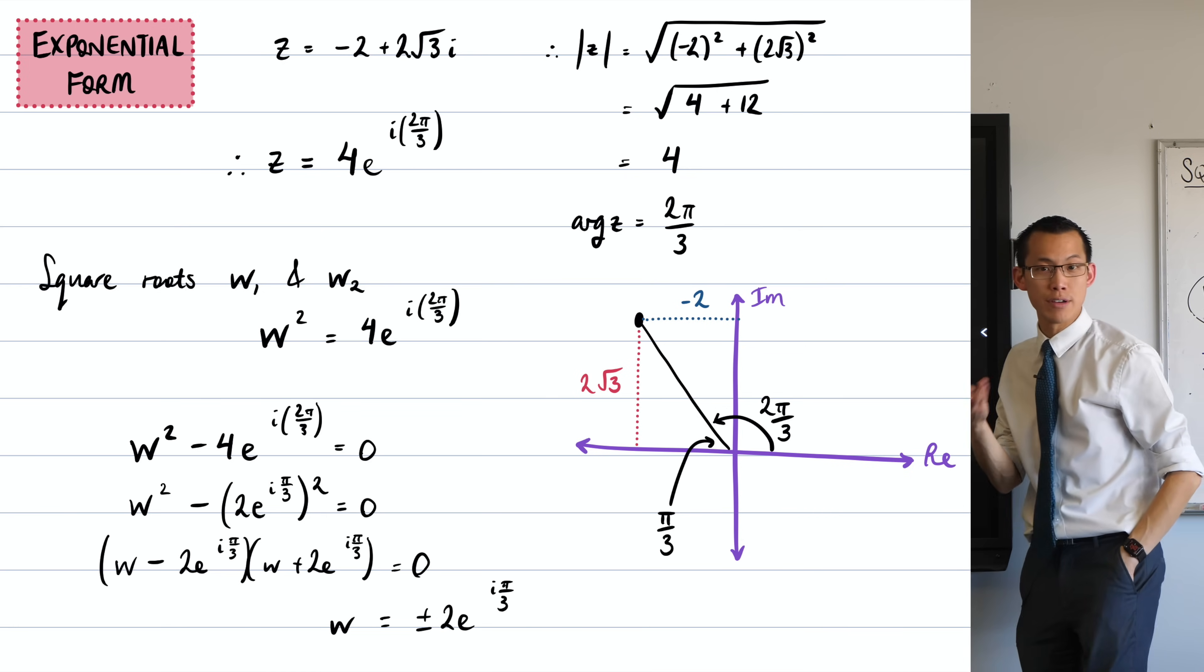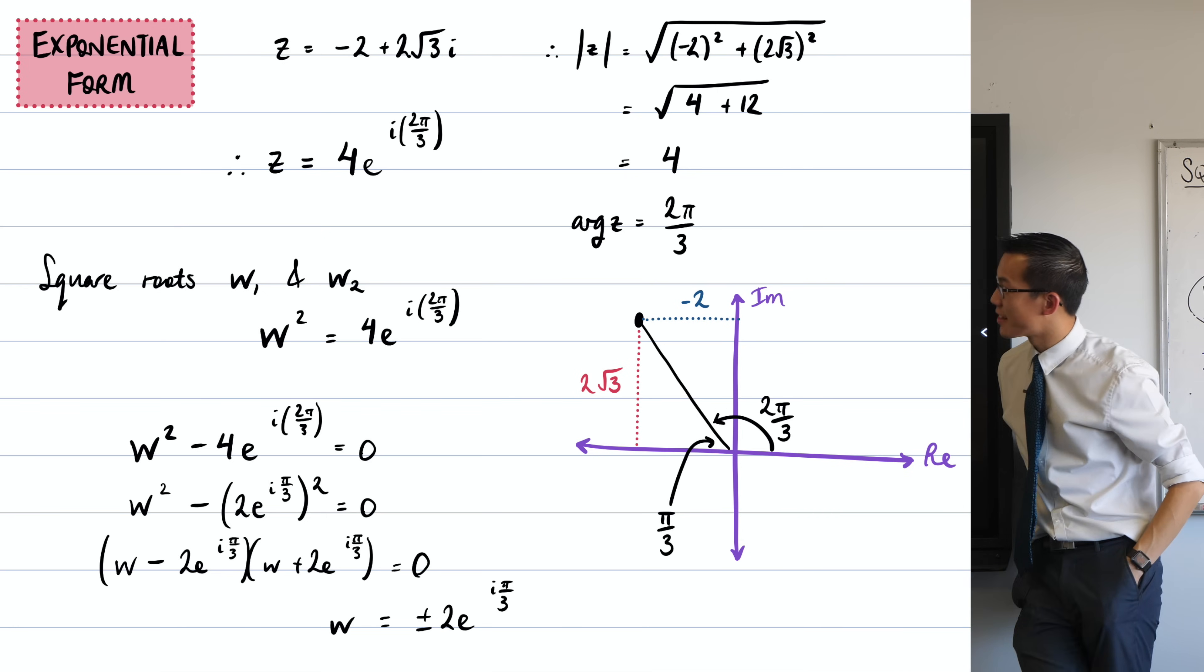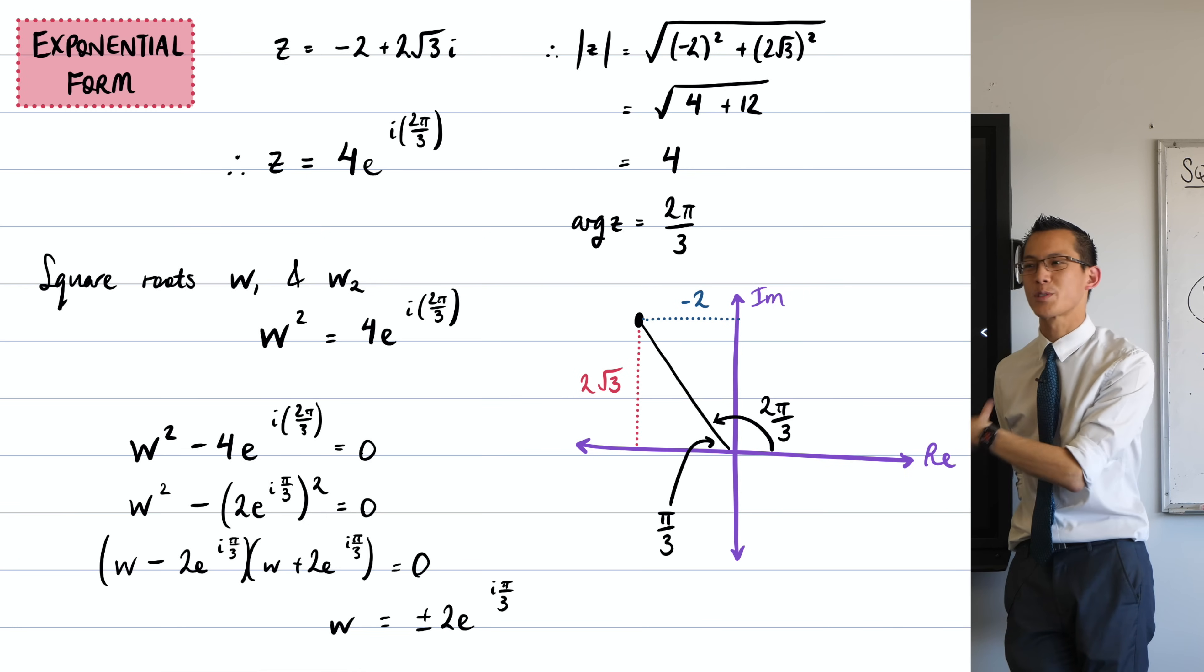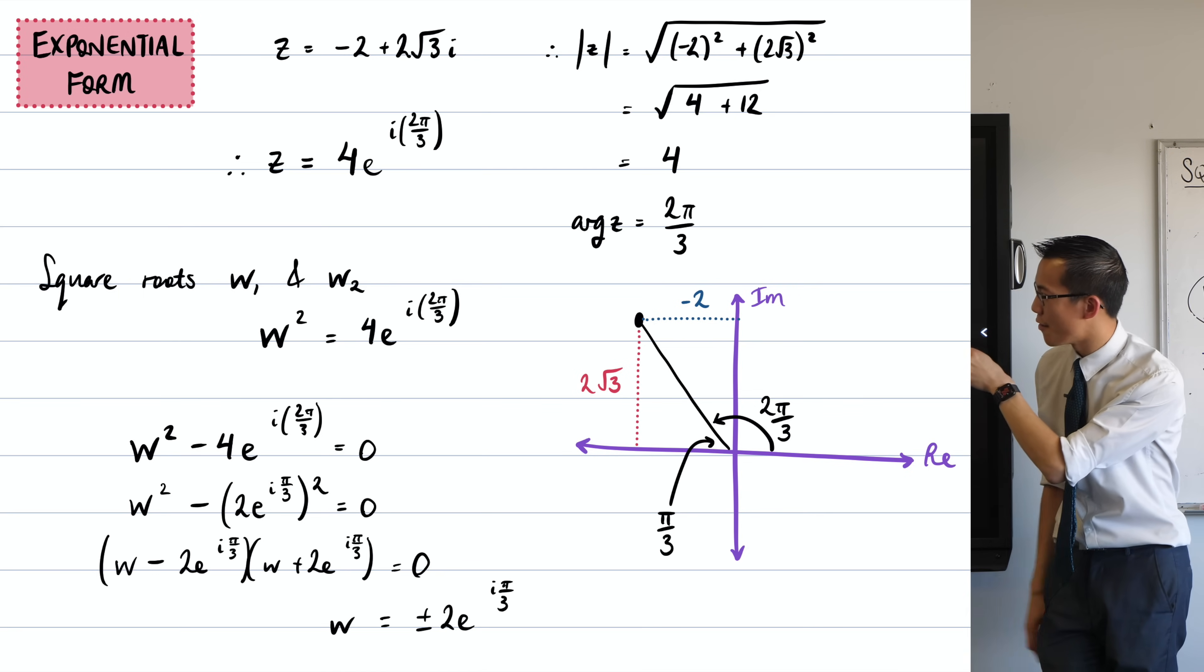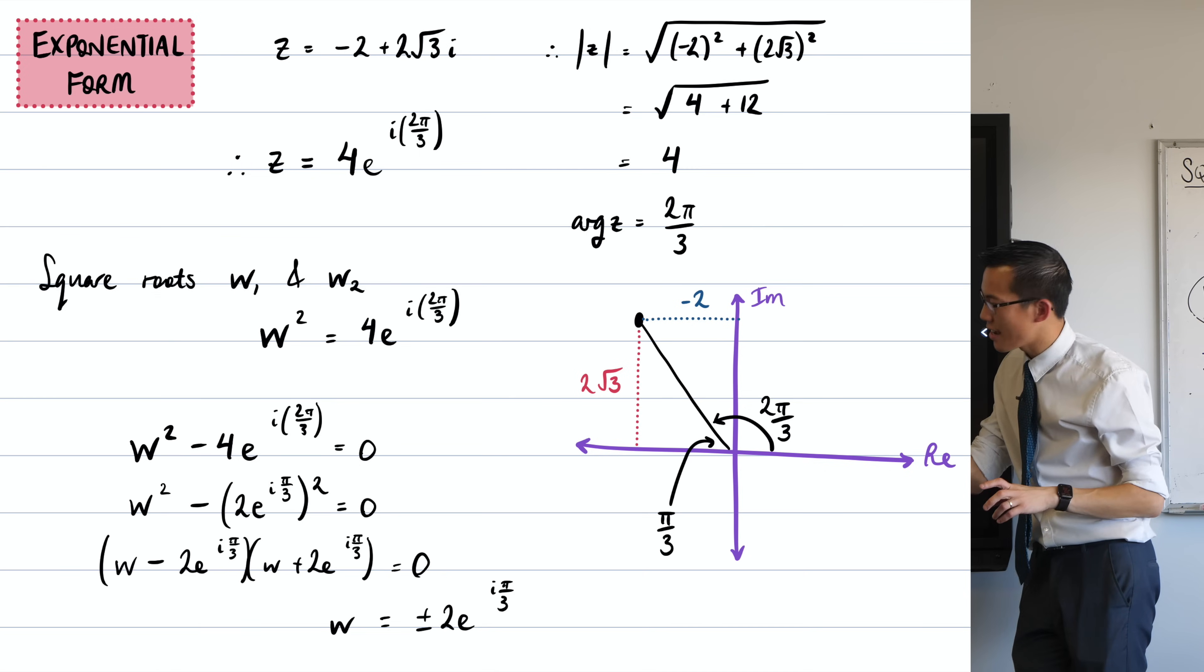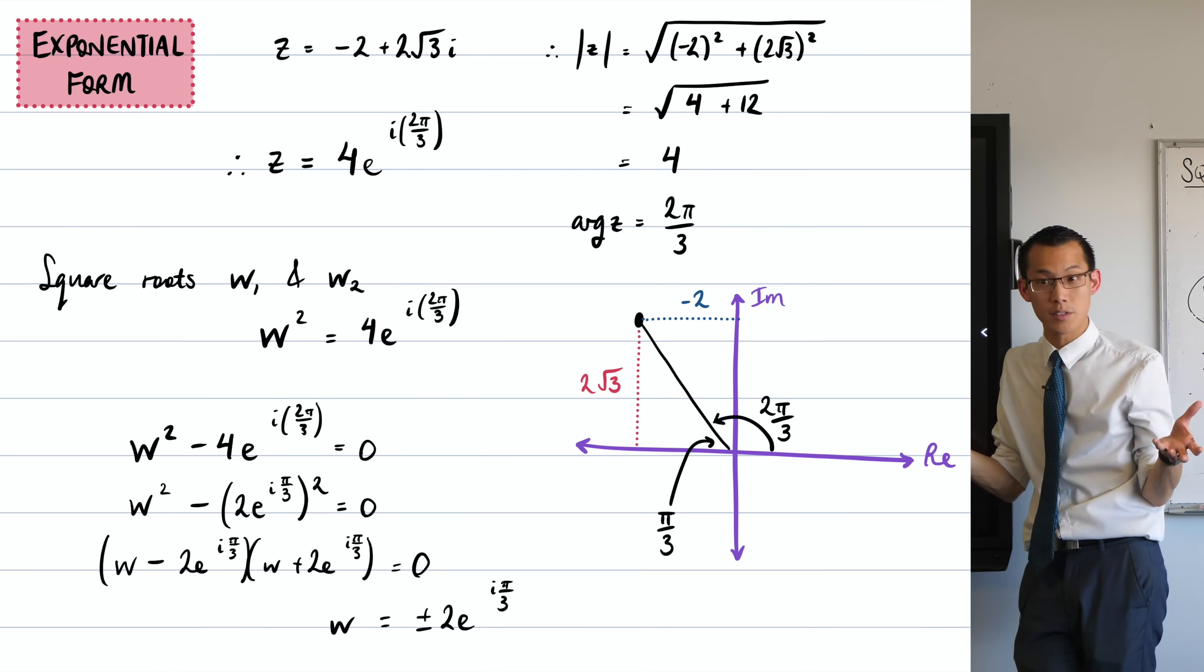Once you've got that, you can see I've rewritten Z as 4E to the i 2 pi on 3. And then from there, it's almost like that form of number was designed to make questions like this easy to deal with, right? You can see I've, I think I use, I don't know why I use W instead of Z, maybe because I was separating my working out, but you can see I've just factorized using difference of squares.